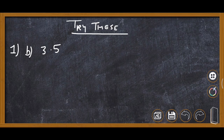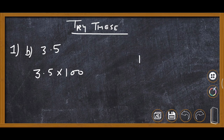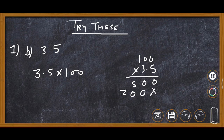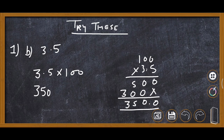Now we are converting 3.5 as percent. We are required to multiply 3.5 by 100. Whenever you multiply, the decimal moves to the right side. So after moving the decimal 2 places to the right, we get 350%.